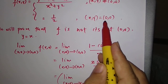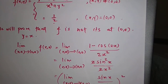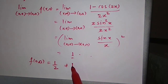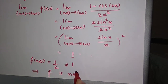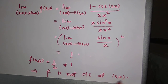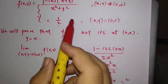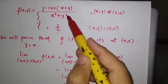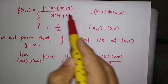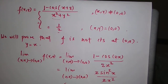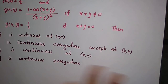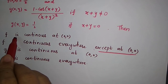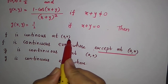But f(0,0) was given to be 1/2, and 1 ≠ 1/2, which implies f is not continuous at the origin. We have also observed that except at the origin, the function is continuous everywhere, because it is just a quotient of two continuous functions where the denominator never vanishes. So f is continuous everywhere except at the origin. The first option — that f is continuous everywhere — is false.